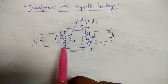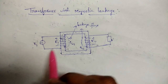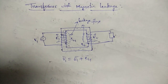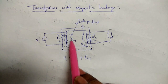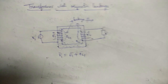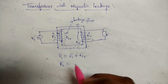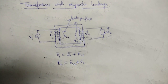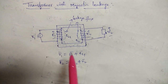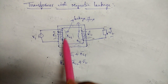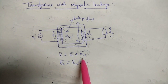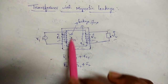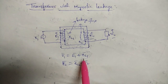Neglecting the winding resistance, the voltage equation is: V1 = E1 + El1 (taking vectors). Similarly, E2 = El2 + V2, where V2 is the load voltage. Before considering magnetic leakage, V1 was equal to E1. But after considering it, there is a voltage drop due to magnetic leakage, that is El1.